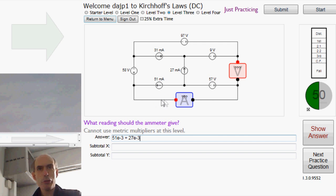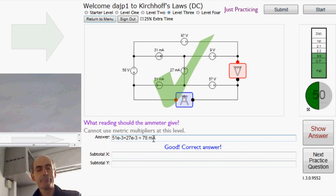So the total current through the ammeter, from red to black, must be 51 milli plus 27 milli. Fine. Again, you get much faster at these with practice.